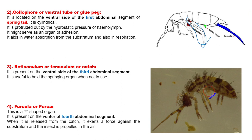The colophore is protruded out by the hydrostatic pressure of the hemolymph. It serves as an organ of adhesion and helps in water absorption from the substratum and also taking oxygen from the surrounding environment.